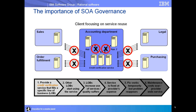This happens a lot, and it exposes the need for governance. We need a way to govern and control the service level agreements and ensure that the people using the service get the quality of service they need. This is fundamentally what SOA governance is all about.